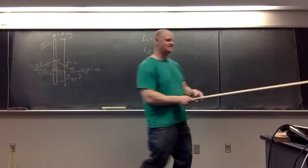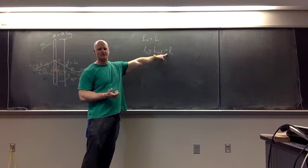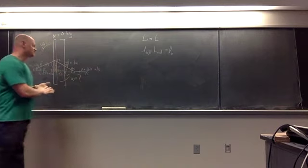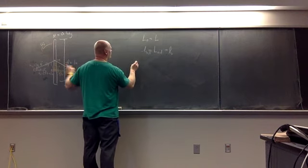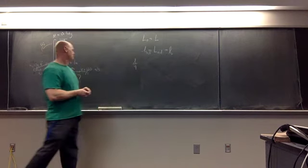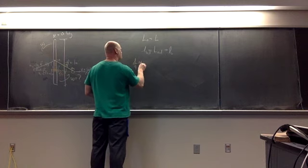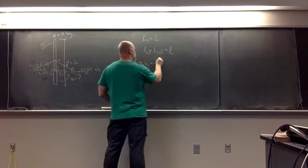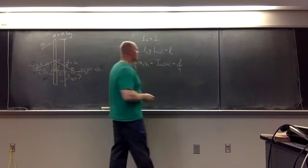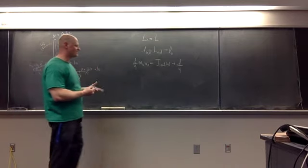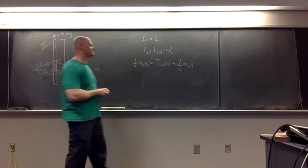Since the angle is 90 degrees and sine of 90 equals 1, the angular momentum equation simplifies. The left-hand side becomes R — which is L over 4, the distance from pivot to where the bullet hits — times the momentum of the bullet initially, which is mass of the bullet times initial velocity. This equals the moment of inertia of the rod times the angular velocity, plus the distance L over 4 times the mass of the bullet times the final velocity.